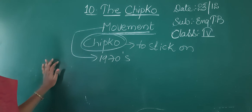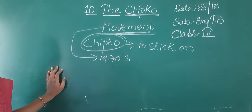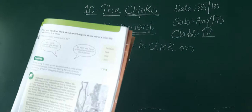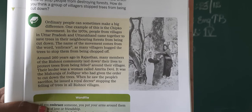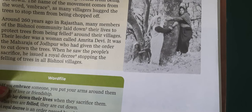People from villages in Uttar Pradesh and Uttarakhand came together to save trees in their neighboring forests from being cut down. The name of the movement comes from the embrace, as many villagers hugged the trees to stop them from being chopped. Embrace means love — see how the villagers of Uttar Pradesh and Uttarakhand are stopping people from cutting down trees by hugging them.